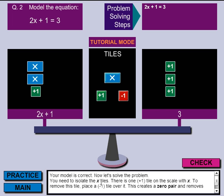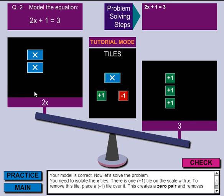You need to isolate the x tiles, which means I want to get the x tiles by themselves. So there is a plus 1 tile on the scale with the x. And in order to remove it, I have to put a negative 1. Now, this is what's called a zero pair because positive 1 and negative 1 is going to be the inverse, basically, and it's going to get rid of it. Boom.